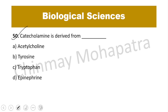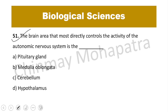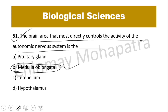Question 50: Catecholamine is derived from — the right answer is tyrosine, B is the right answer. Question 51: The brain area that most directly controls the activity of the autonomic nervous system is — the right answer is medulla oblongata.